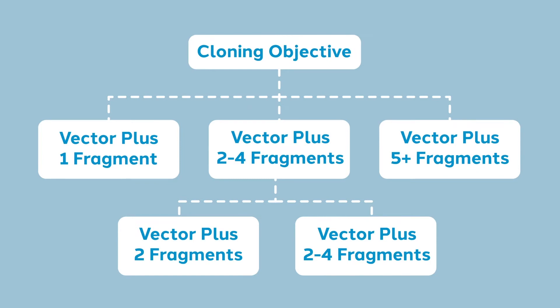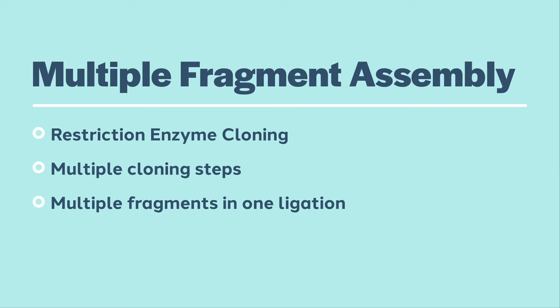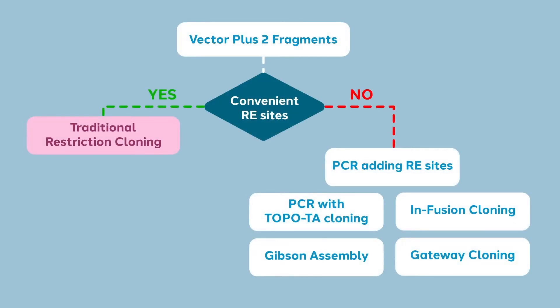Now let's consider putting 2 to 4 fragments together in a new vector. When going from 1 to 2 fragments being inserted into a vector, the decision tree does not change dramatically. Traditional restriction cloning is still an option. You can either clone your fragments in one at a time, which is relatively tedious, repeating the cloning cycle for each fragment. The other option is preparing multiple inserts to be recombined in one reaction. Your likelihood of success drops dramatically as you increase the number of inserts you are attempting to ligate. Traditional restriction enzyme cloning becomes increasingly cumbersome stepwise and increasingly inefficient with multiple fragments simultaneously. Thus, non-restriction based cloning techniques become more appealing.